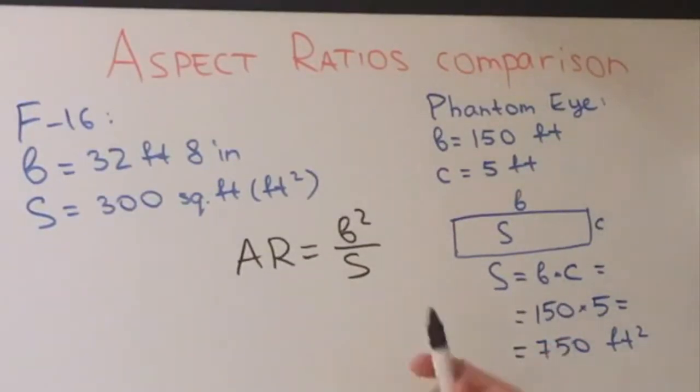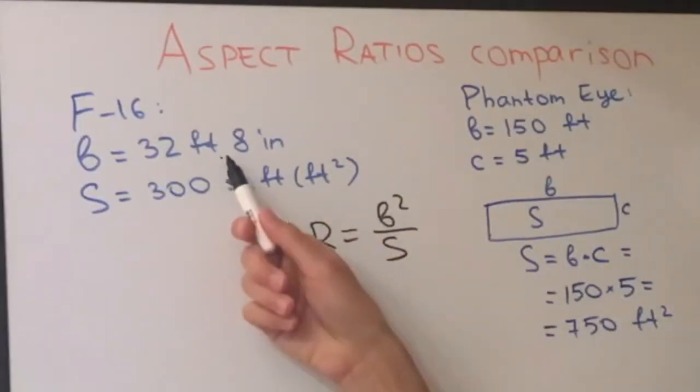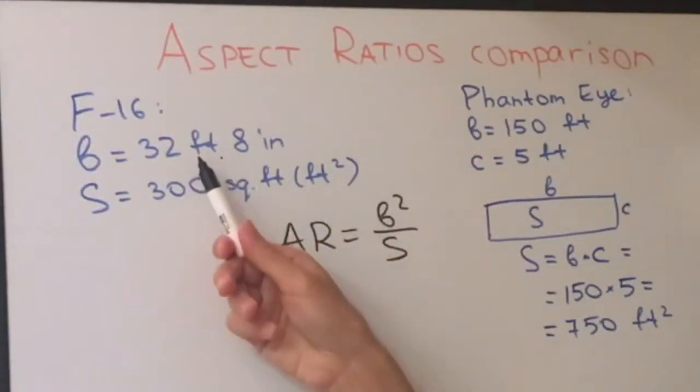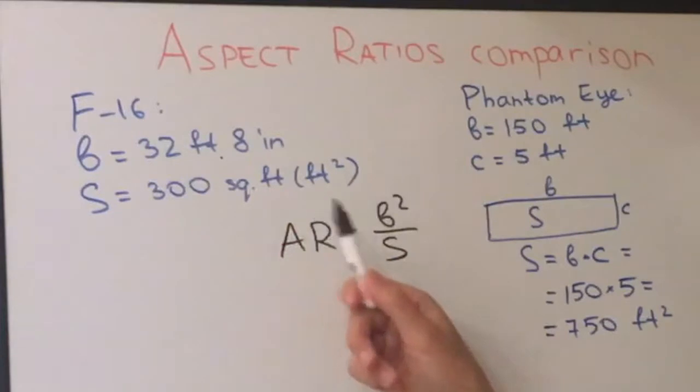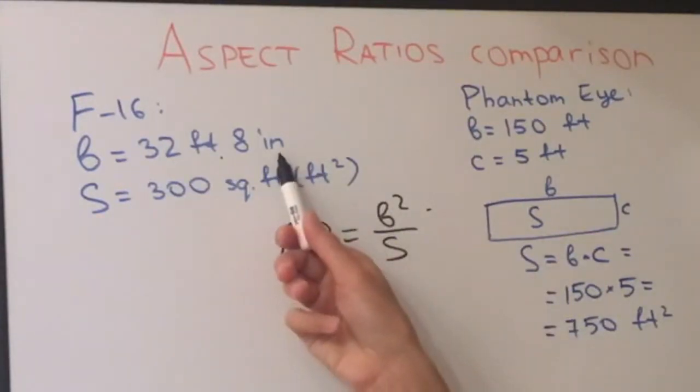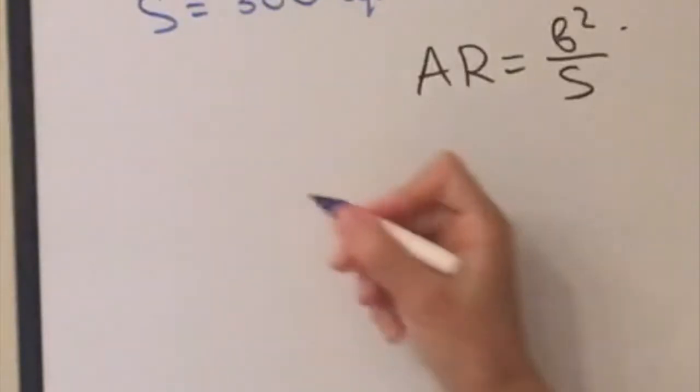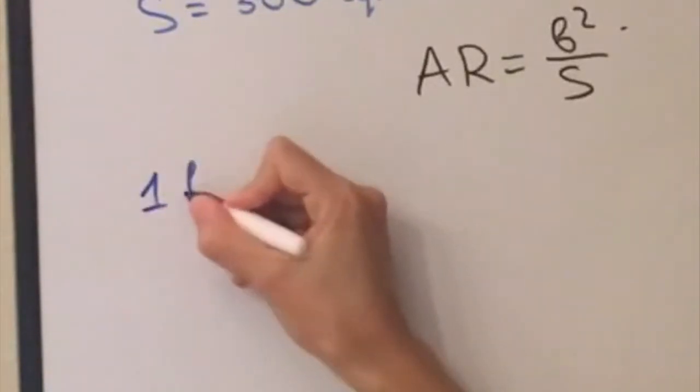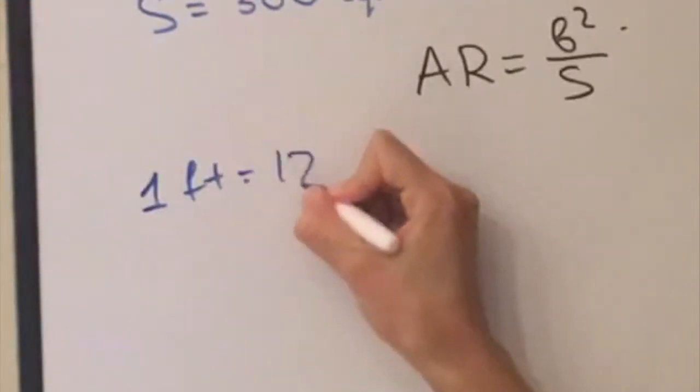But there's something we need to be careful about, which is the units. For F-16 we have feet and inches in the numerator and square feet in the denominator. So we need to get rid of inches. And how do we do that? Well we need to remember that 1 foot is equal to 12 inches.